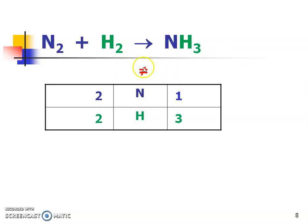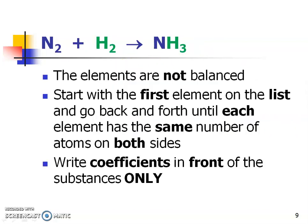We notice that this reaction is not balanced. Pause and fill in those blanks. We pulled out the elements — they are not balanced. We're going to start at the top of our list and go back and forth until each element has the same number on both sides. I don't need four nitrogens and four hydrogens — I just need the same amount of nitrogens on both sides and the same amount of hydrogens on both sides. The only thing we can do is put numbers in front of our substances — we cannot change the subscripts, because that would change the substance altogether.